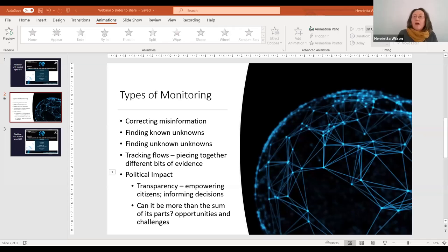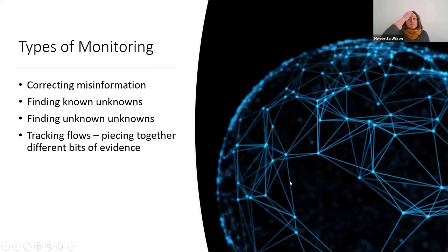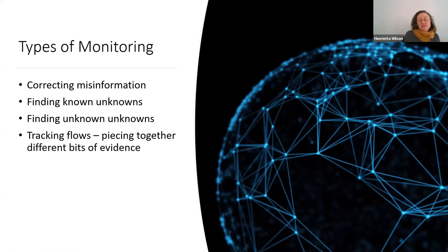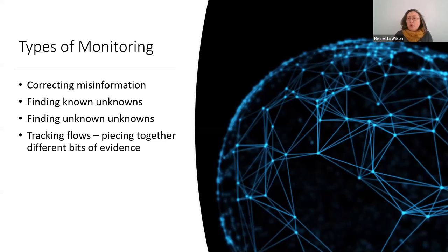So what I've been finding is some overlapping themes emerging from these conversations. As I said, there are all sorts of different types of monitoring doing different sorts of things. Through the webinars we've seen examples of open source research that's been fundamentally aimed at correcting misinformation, and I point to Richard Guthrie's case study of the yellow rain incident — a historical piece of research by Julian Perry Robinson and Matt Messelson in which through open sources they managed to dispel allegations of use of biological warfare in South Asia.